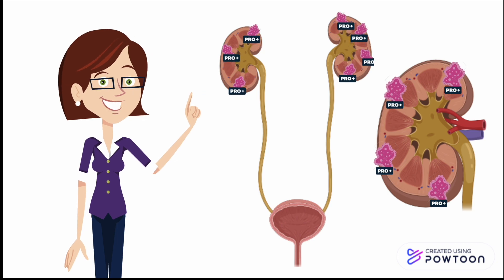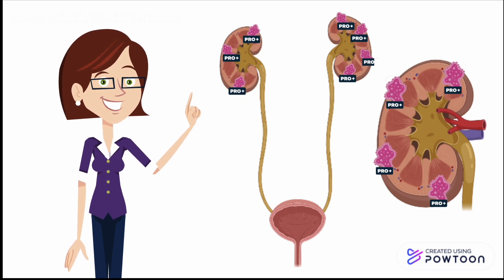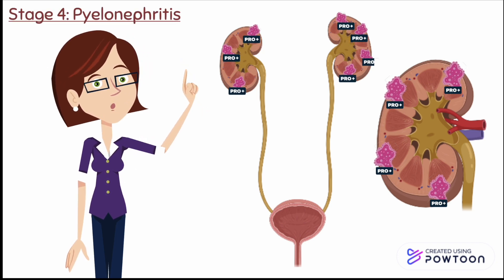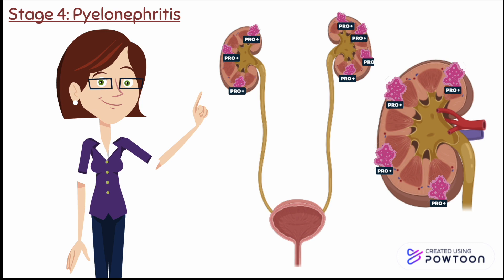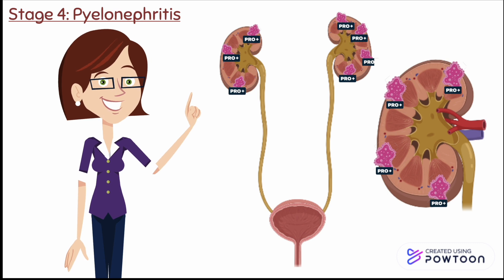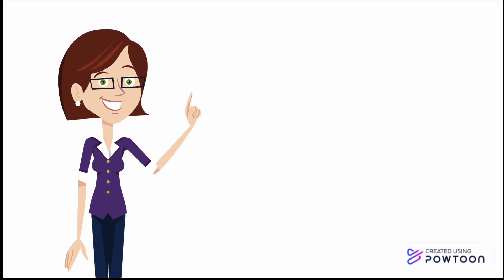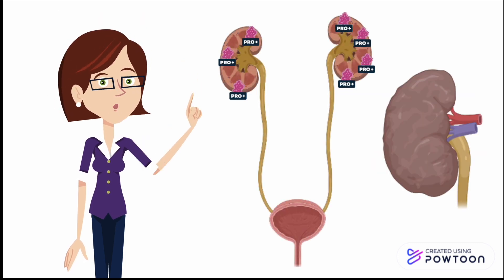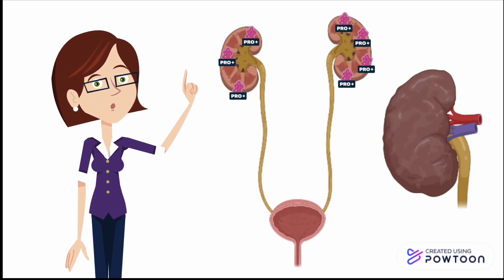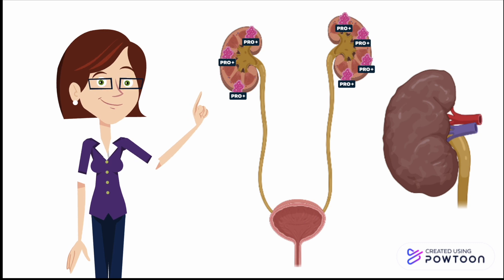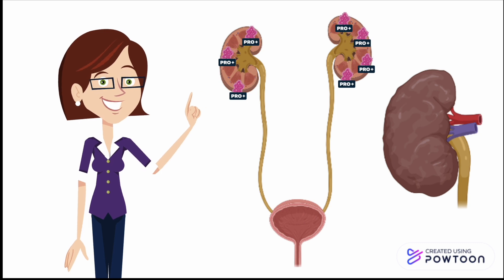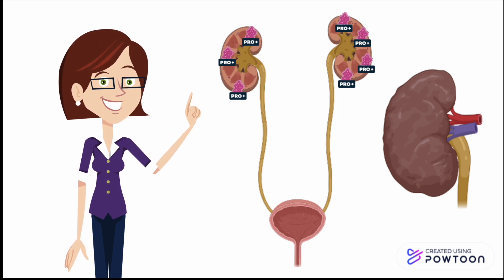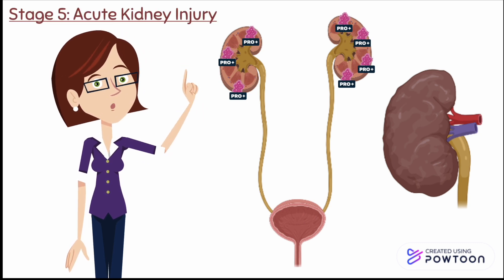This results in an inflammatory response called pyelonephritis, which is the fourth stage of a UTI. Continuous inflammatory response results in interstitial edema, interstitial nephritis, and ultimately the fifth and final stage of a UTI called acute kidney injury.